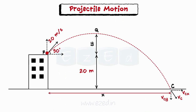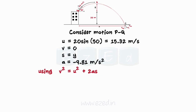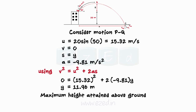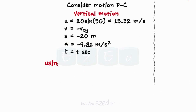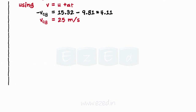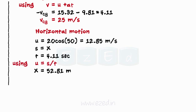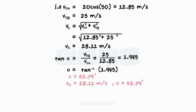Let x be the distance from the foot of the building and let the ball reach a height y meters above the building. Consider the vertical motion from P to Q and write all the initial conditions. Using the equation for uniform acceleration and substituting the values, we get the maximum height attained by the ball. Now consider the motion from P to C. Consider vertical motion and write all the initial conditions. On substituting the values in the equation for uniform acceleration, we get the time taken by the ball to reach point C and the vertical velocity component at point C. Similarly, evaluating for horizontal motion, we get the distance travelled by the ball. On substituting respective values, we get the resultant velocity at point C.